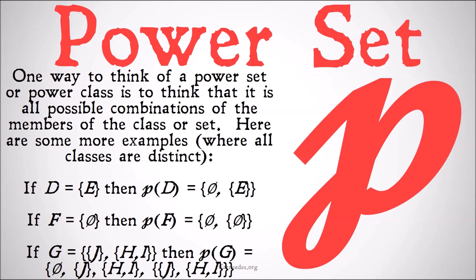Here are some more examples where, once again, assuming all classes are distinct. If D is equal to the class of E, then the power class of D is equal to the null set and the class of E. So when there's only one member, the only combinations we can do are everything or nothing.